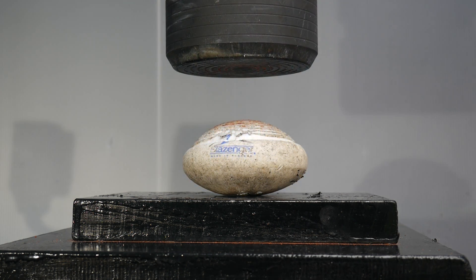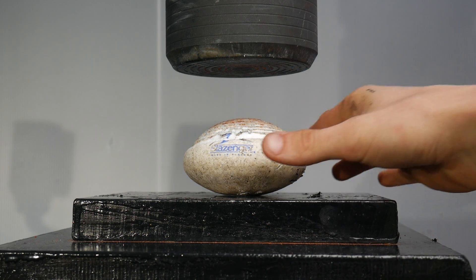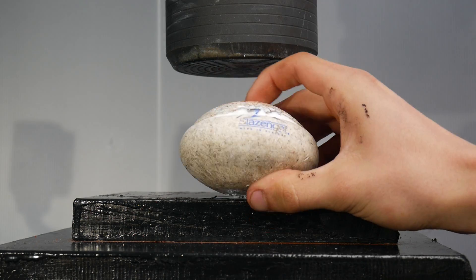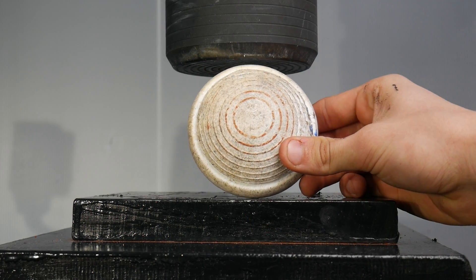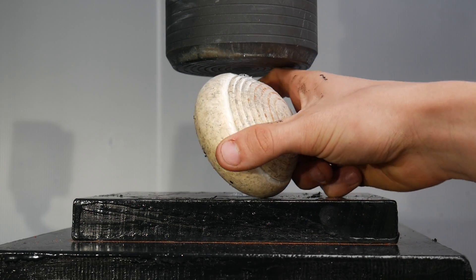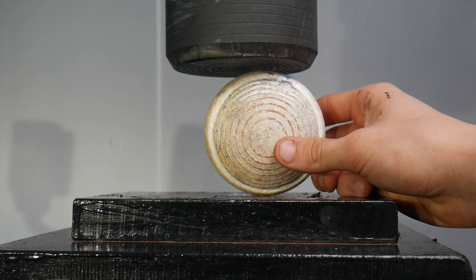I was expecting that to shatter, but surprisingly not. It just turned into a dome shape with the pattern of the press on there. It's pretty cool. Let's try and do it sideways and see what happens.